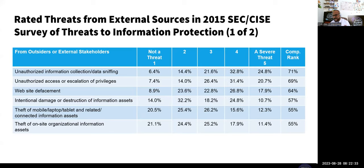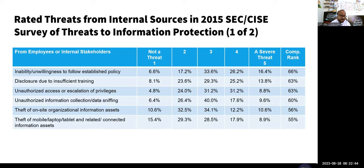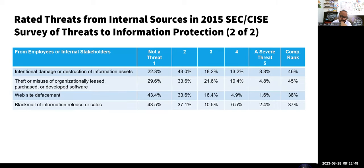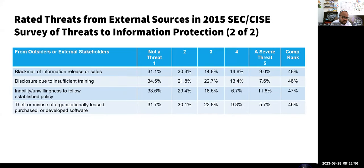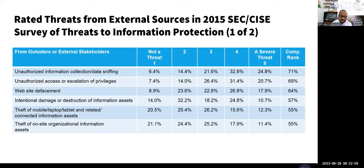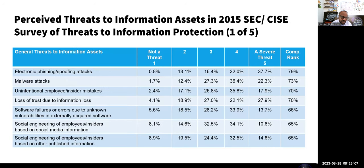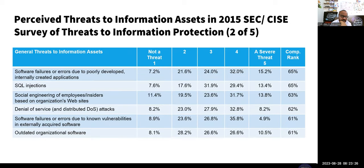Now looking at external sources — internal would obviously be an employee already inside the organization. Comparing internal versus external statistics, for example, web defacement shows about 43% from internal people and only about 8.9% from external. So certain threats come more from internal people than external. When looking at threats to assets, malware attacks rate about 1.7 on the severity scale here.